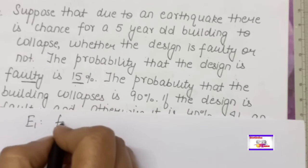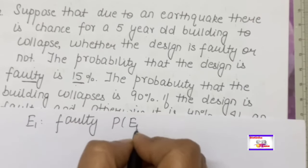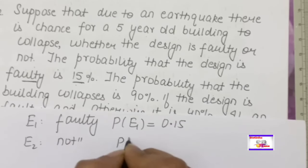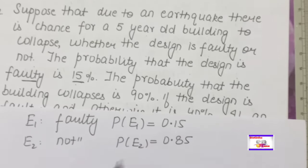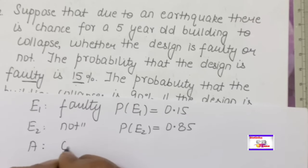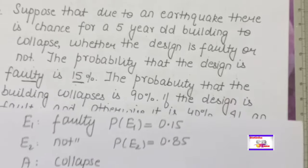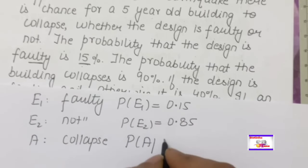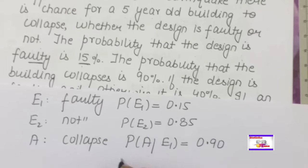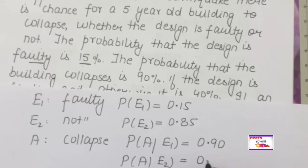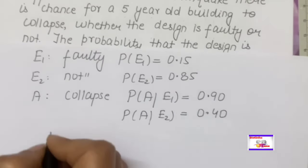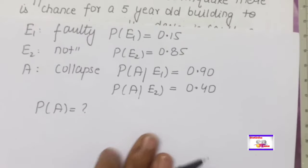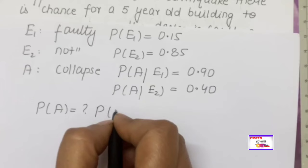Define events: E1 = building design is faulty, P(E1) = 0.15, so E2 = not faulty, P(E2) = 0.85. The event A = building collapses. Given P(A|E1) = 0.90 (building collapses given design is faulty) and P(A|E2) = 0.40. The question asks for P(A), so according to the total probability (Bayes') rule: P(A) = P(E1)·P(A|E1) + P(E2)·P(A|E2).